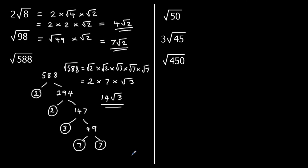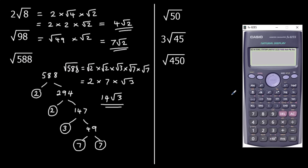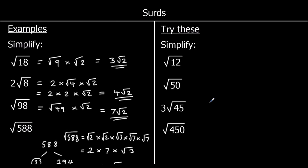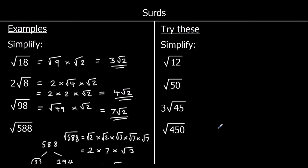If I grab a calculator and type root 588 in, the calculator would simplify it for me and I can check that I've done it correctly. There are 4 questions for you to try here — pause the video, give them a go, and press play when you're ready for the answers.